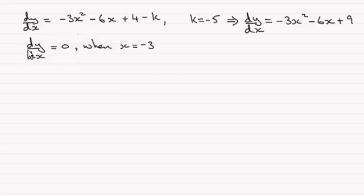So we know that at the stationary point dy/dx equals 0 when x is minus 3. To get the nature of that stationary point, well there's two methods actually.